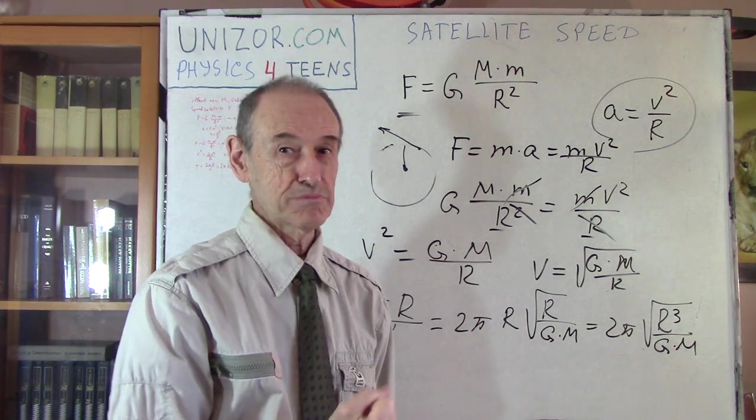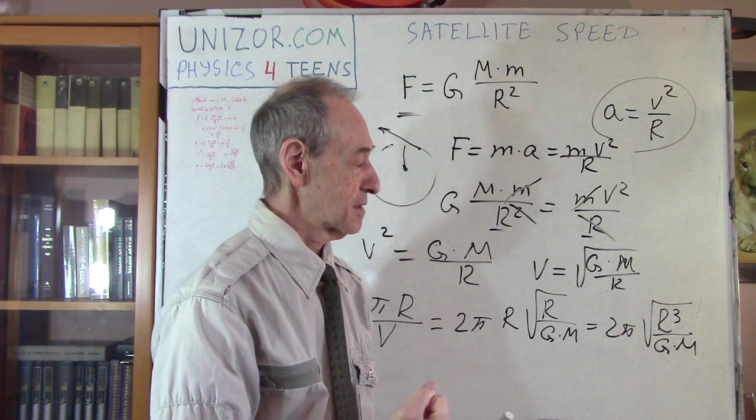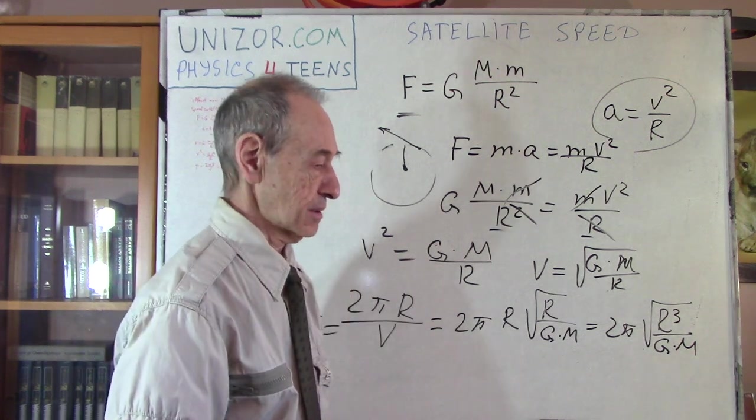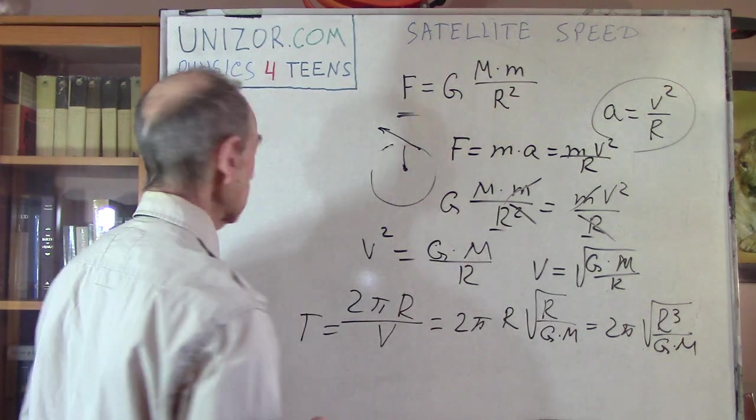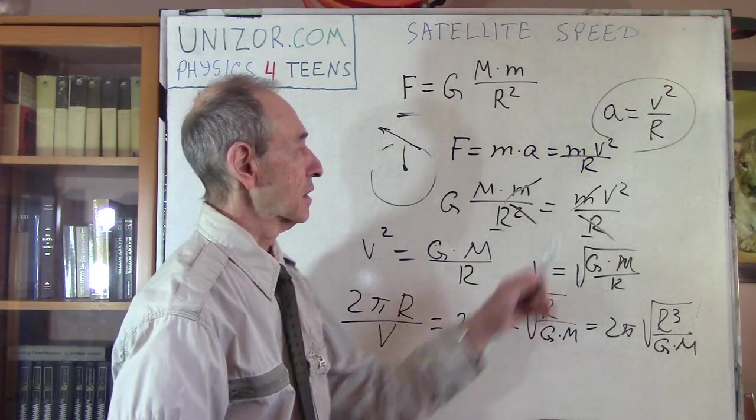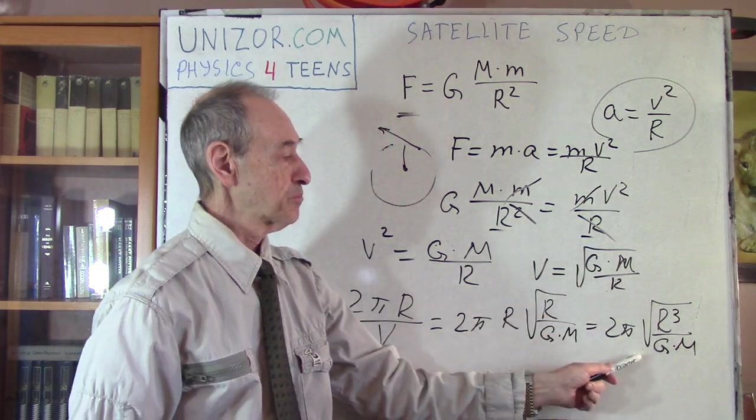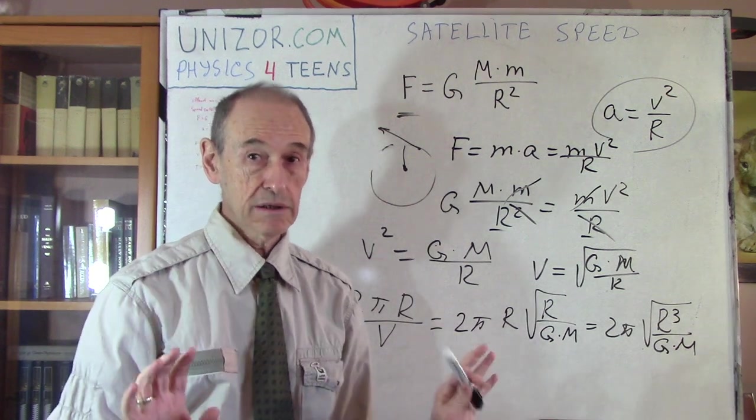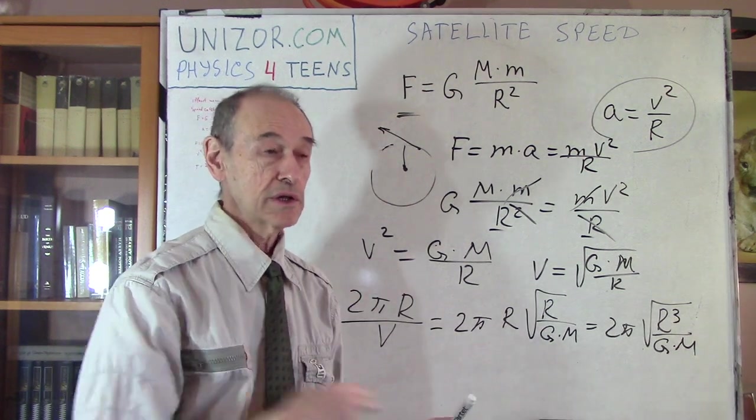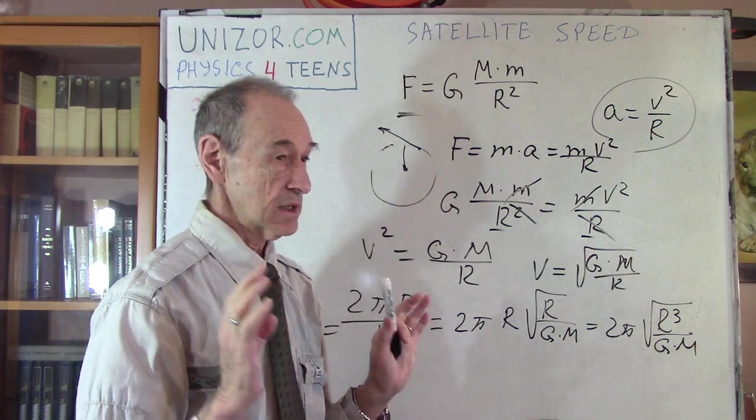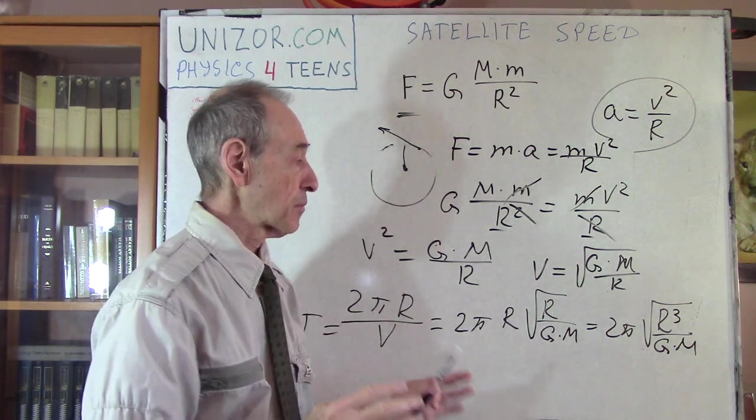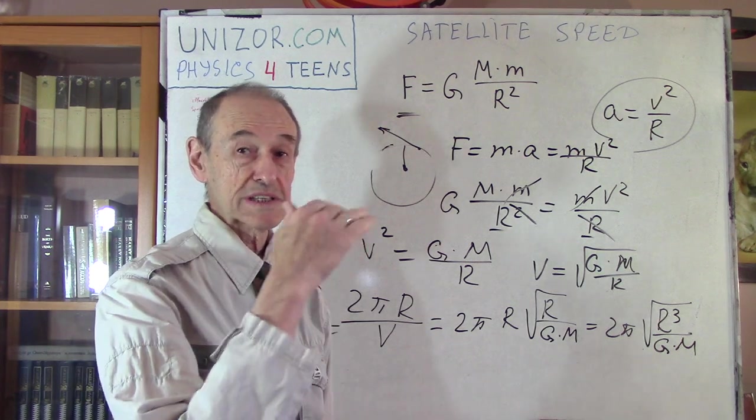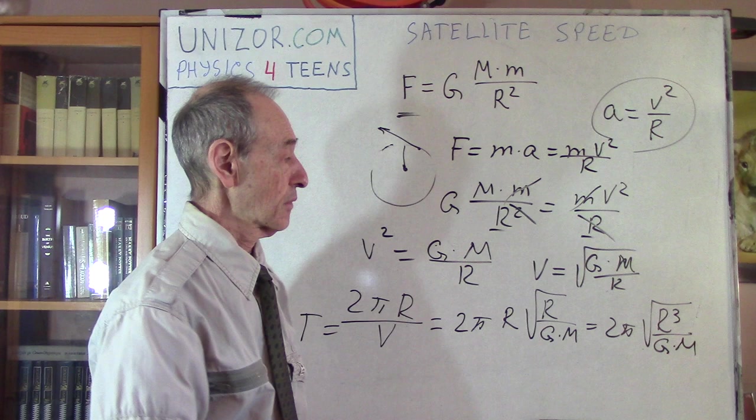So that is basically it. That is all I wanted to say about the speed and the period of a satellite which is freely, without any engine working, freely rotating around the Earth. It is supposed to be somehow calculated if you want to launch a satellite on a specific orbit.